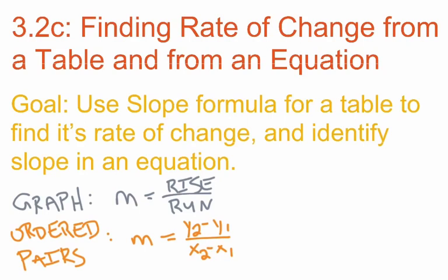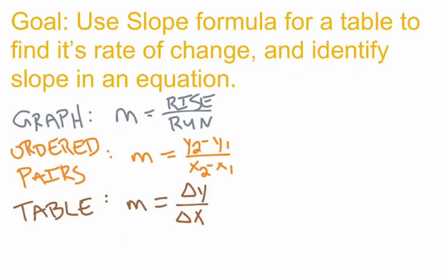The formula we're going to use is m equals delta y over delta x. Those triangles are actually Greek letters — a triangle in the Greek alphabet is the letter delta. So our formula for a table is m equals delta y over delta x. We'll look at a few examples and see how we can use that formula to identify the slope in a table.